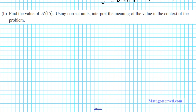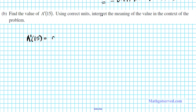Let's take a look at part B. It says: find the value of A′(15) — the instantaneous rate of change at t = 15 — using correct units, and interpret the meaning of the value in the context of the problem. A′(15) means we want to find the derivative d/dt of A(t) evaluated at t = 15, so all we have to do is differentiate the function and plug in 15.